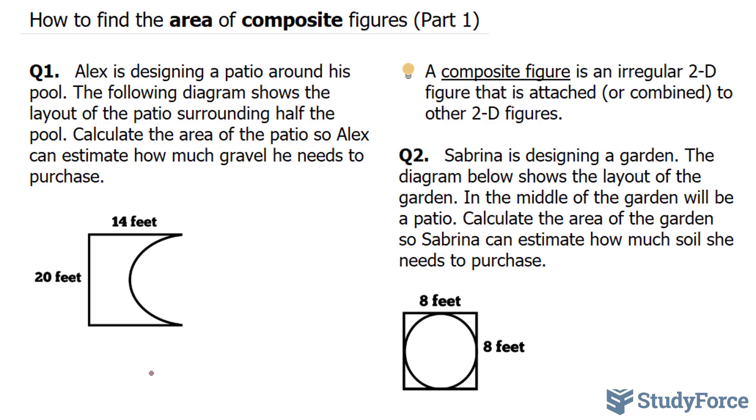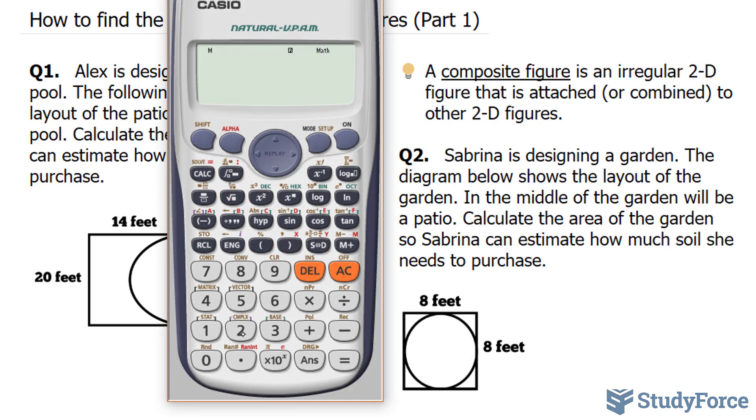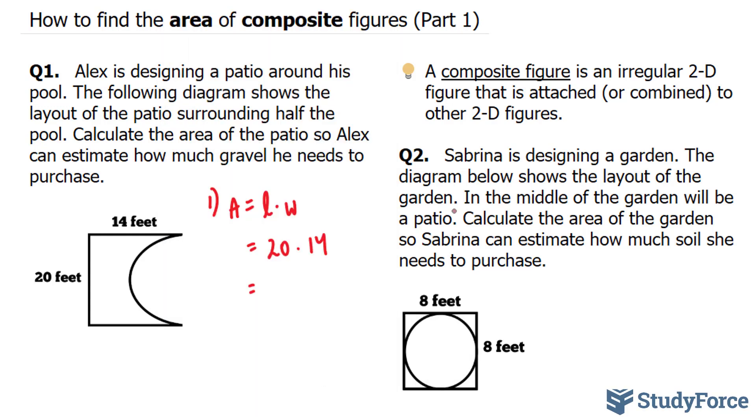The easy part is the area of a rectangle, so we'll start with that. Step one, we're going to find the area of a rectangle which is length times the width. The length is 20 and the width is 14. Multiplying 20 times 14 using our calculator, 20 times 14 is equal to 280. So far, this part right here, this completed part, is equal to 280 feet squared.